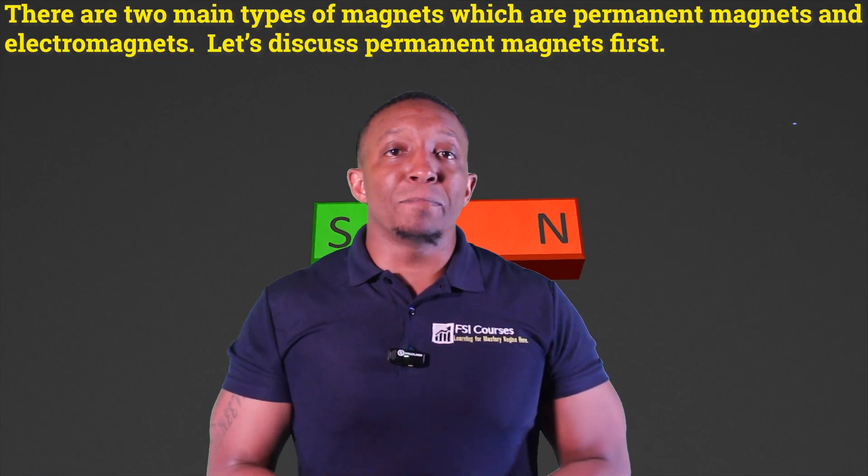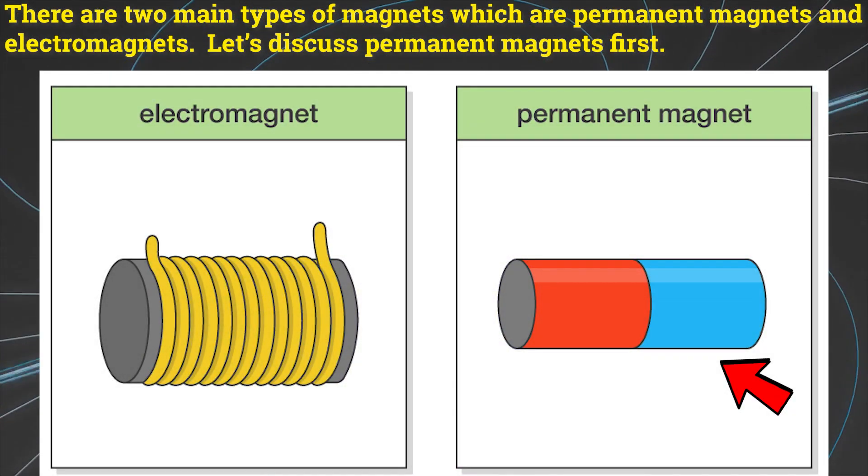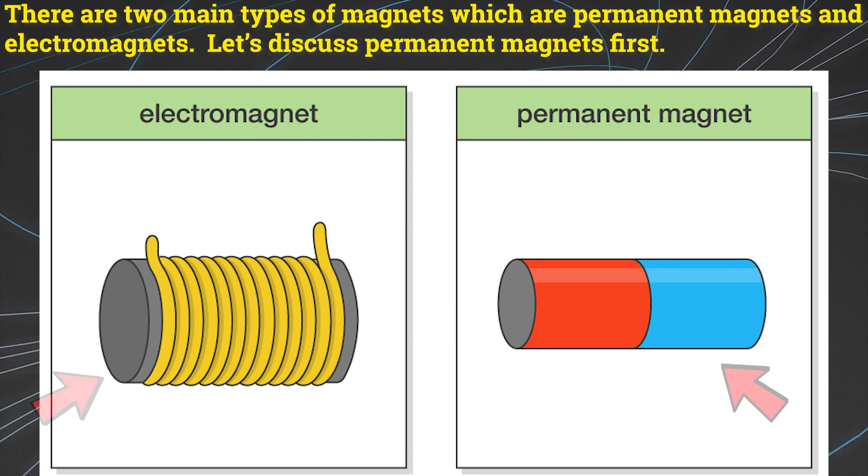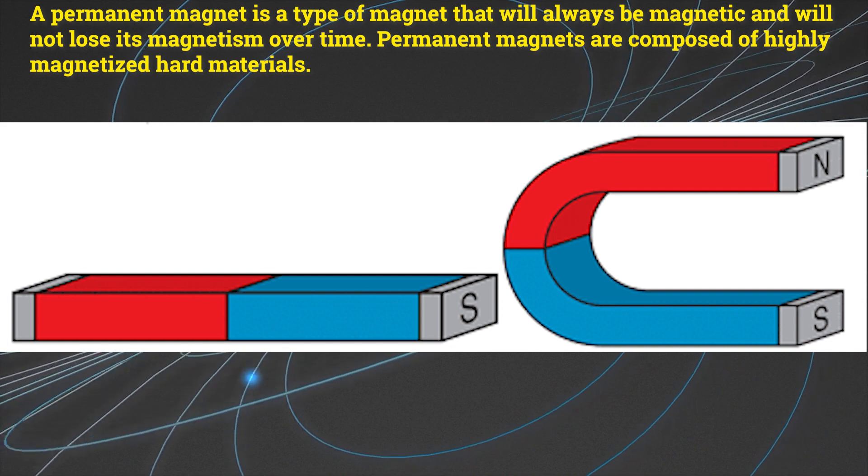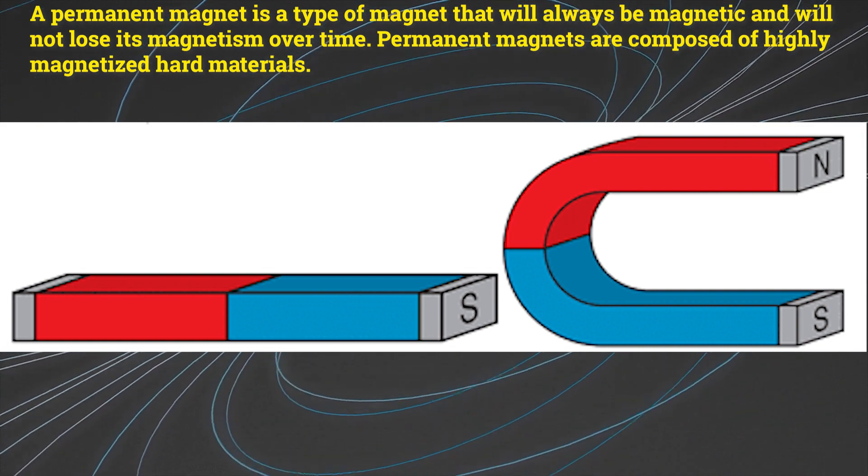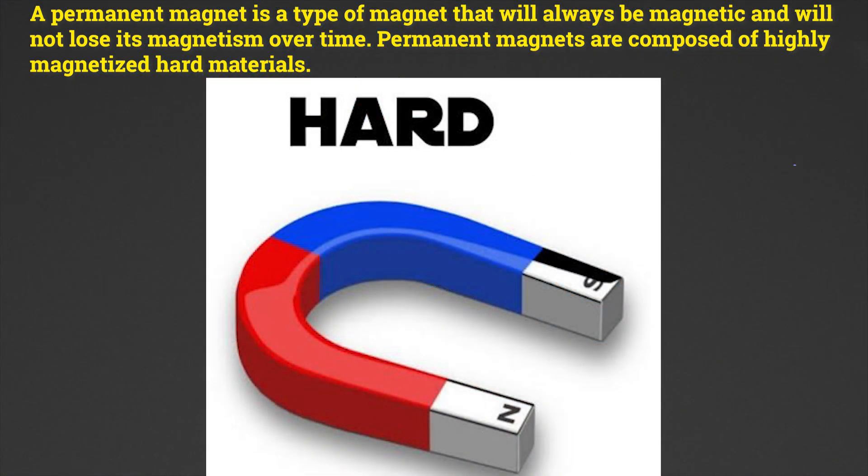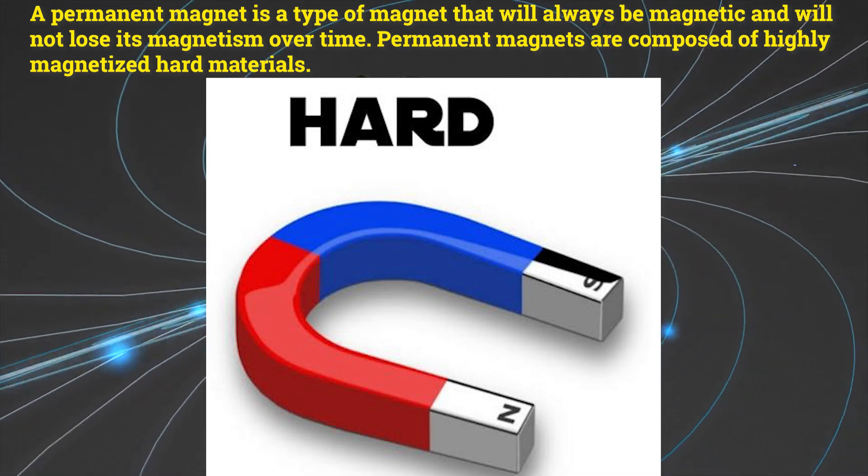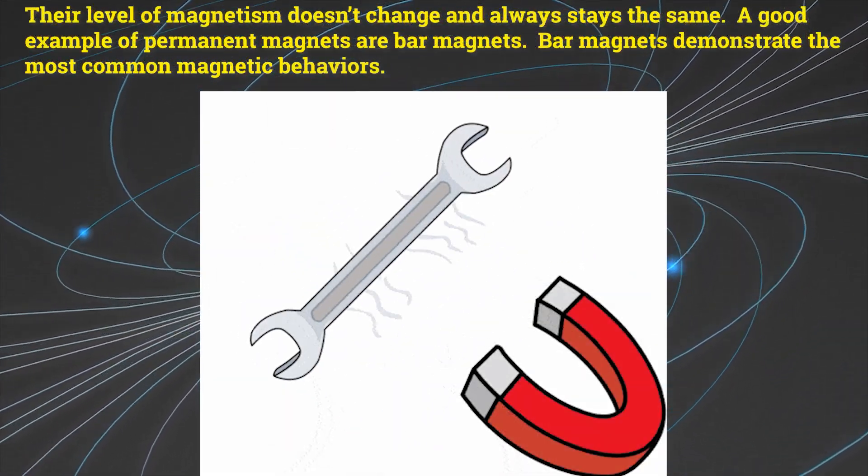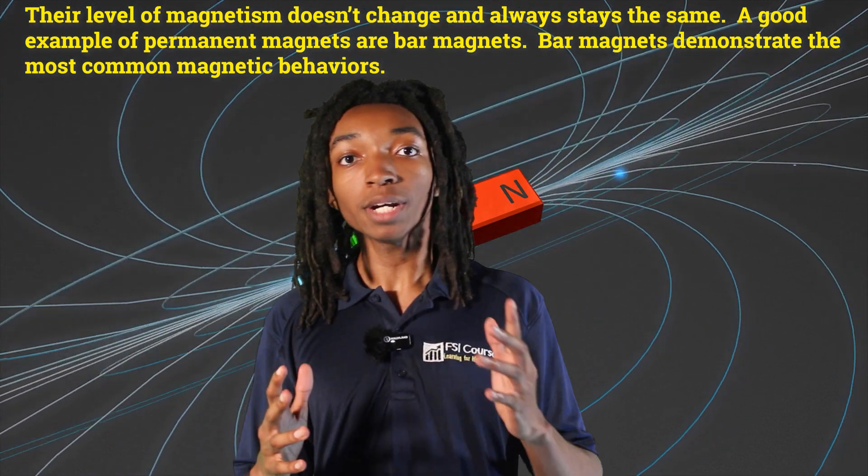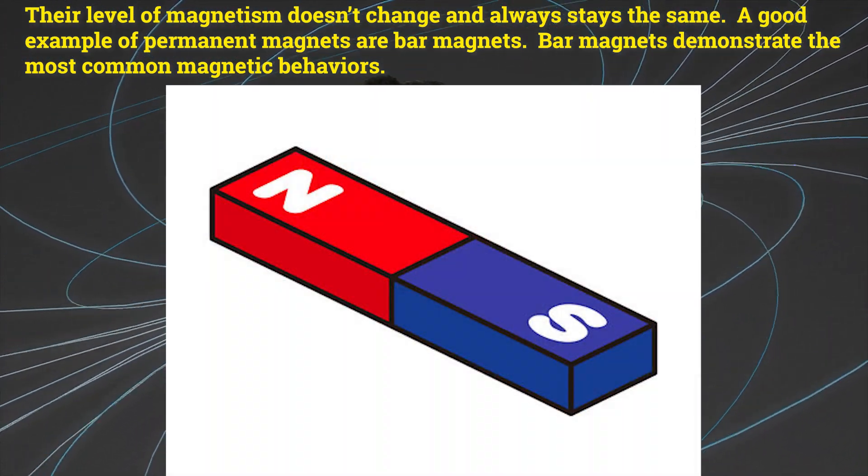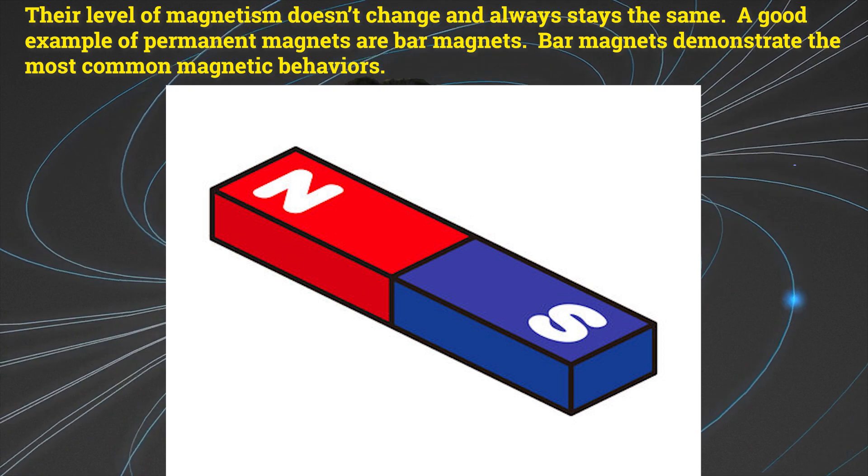There are two main types of magnets which are permanent magnets and electromagnets. Let's discuss permanent magnets first. A permanent magnet is a type of magnet that will always be magnetic and will not lose its magnetism over time. Permanent magnets are composed of highly magnetized hard materials. Their level of magnetism doesn't change and will always stay the same. A good example of permanent magnets are bar magnets.